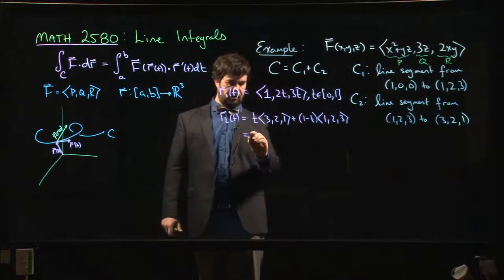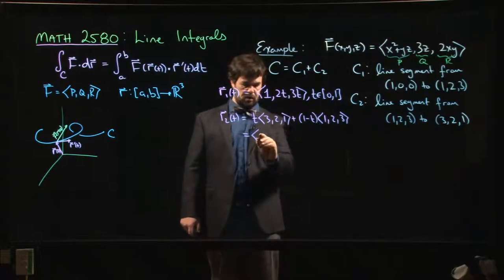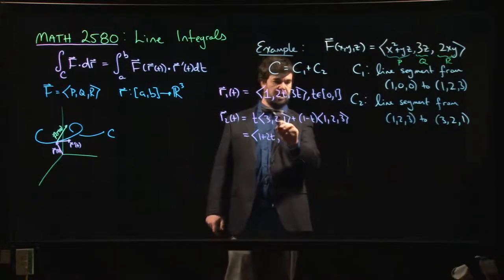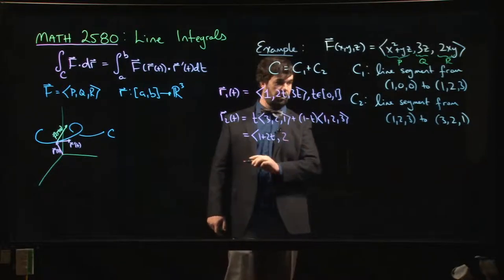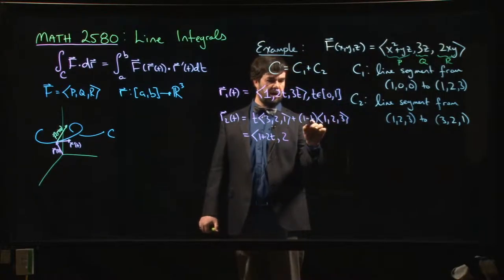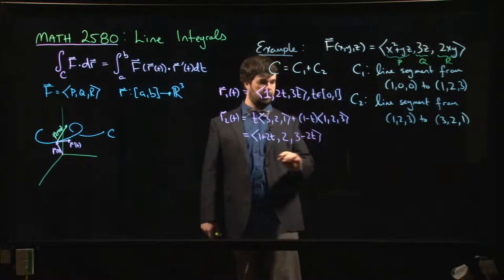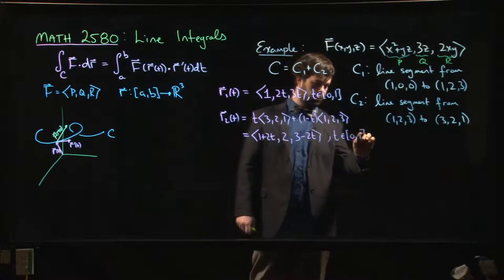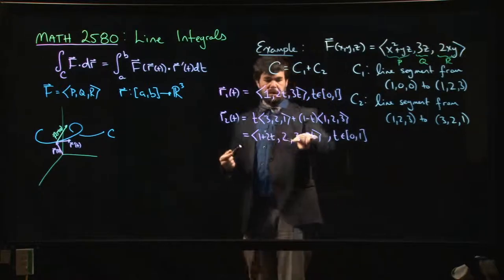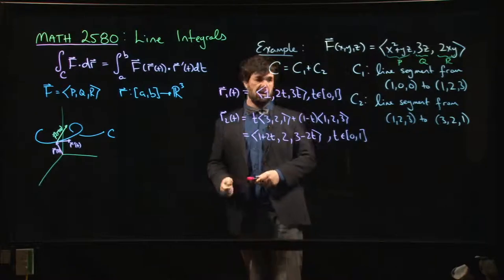If you want to simplify this, what do we get? In the first component, 3t minus t, so 1 minus t plus 3t, so we get 1 plus 2t. In the middle, we have 2t minus 2t plus 2—the middle stays constant at 2. The y-coordinate doesn't change, and then we have 3 minus 3t plus t, so we have 3 minus 2t, t between 0 and 1. You can check that that does the job. It's clearly the parameterization of a line because all three functions are linear. It begins at 1, 2, 3, it ends at 3, 2, 1, so this is going to be what we want.